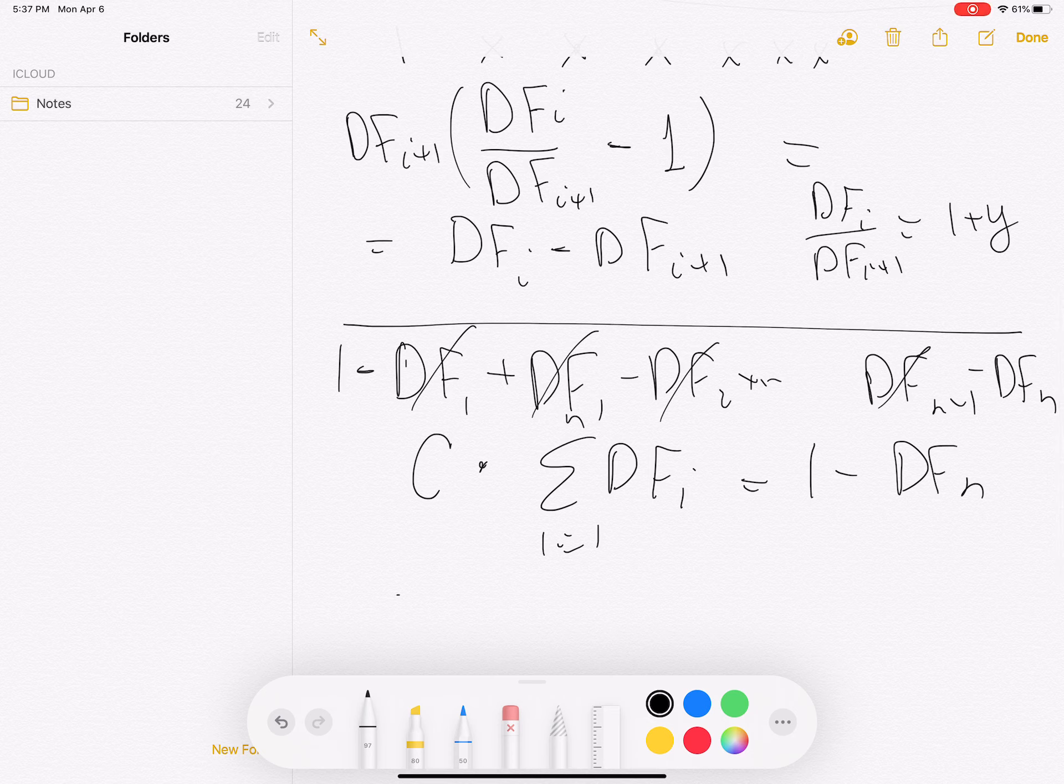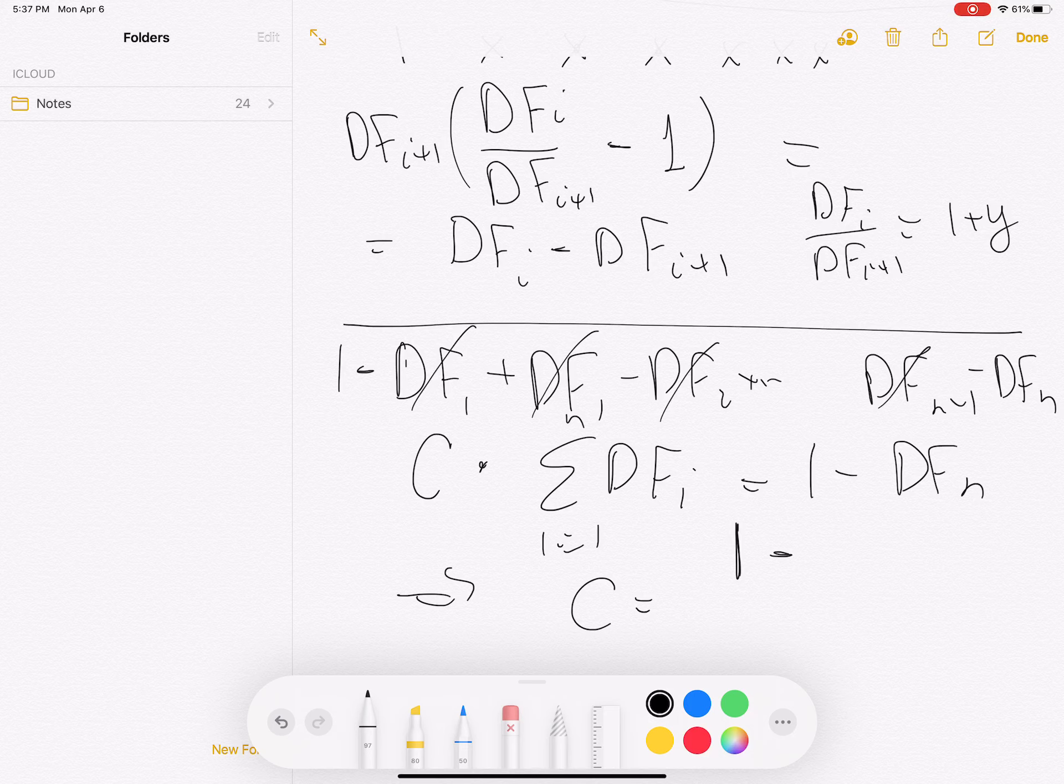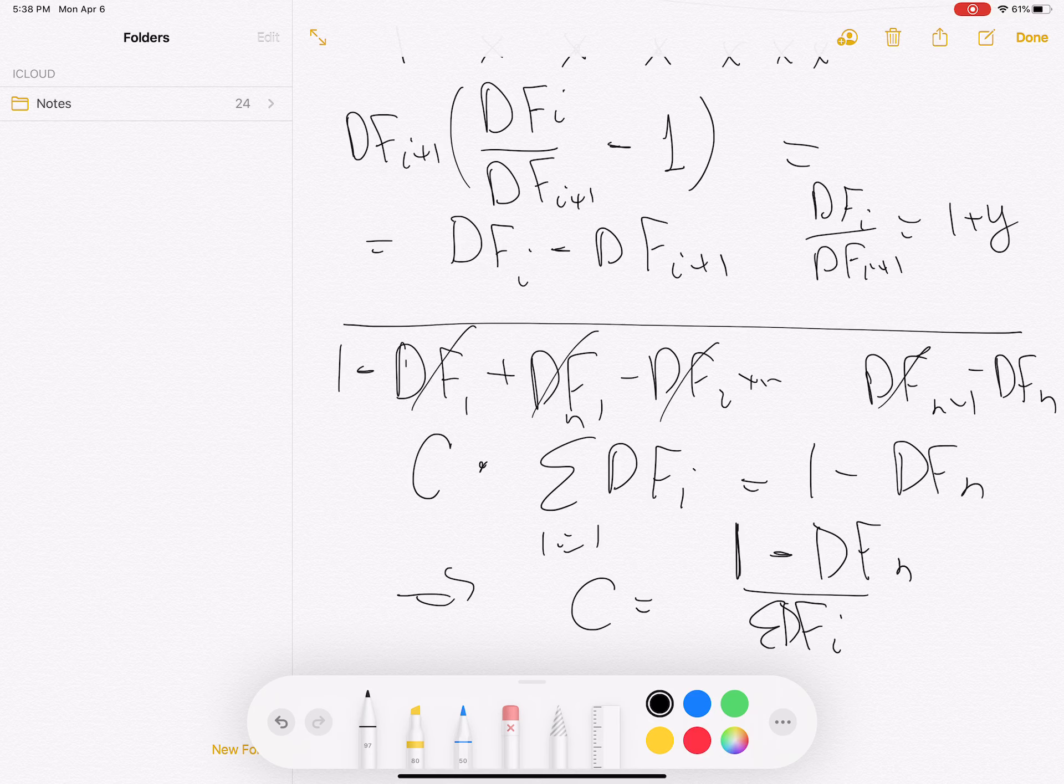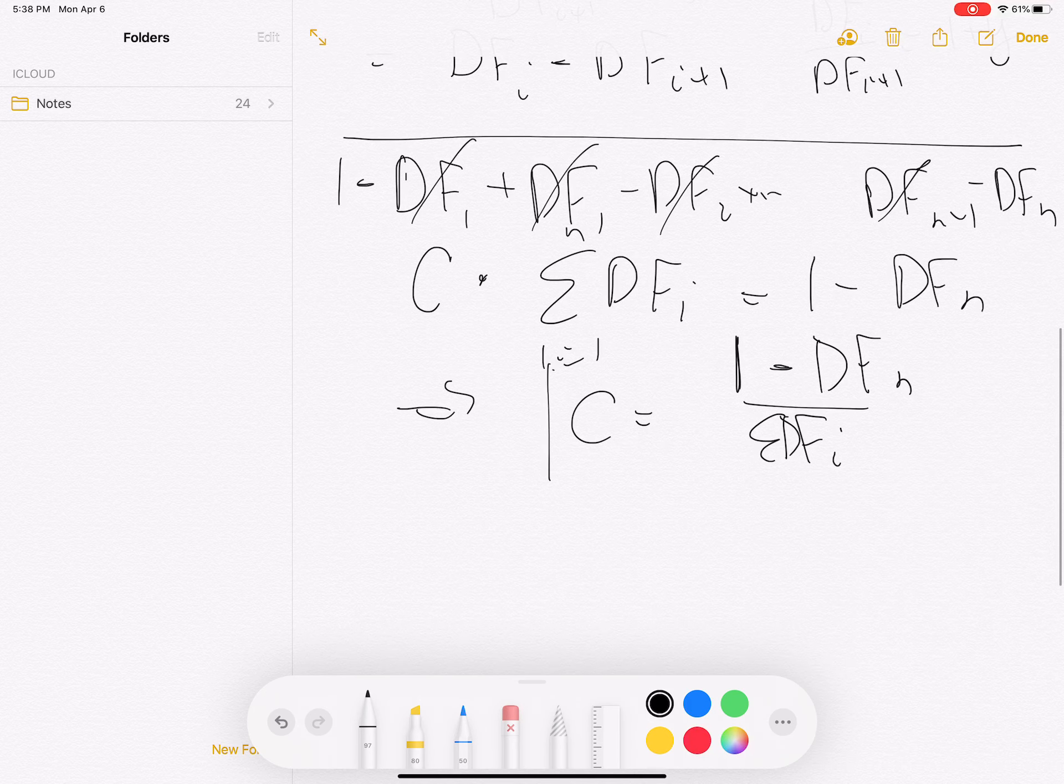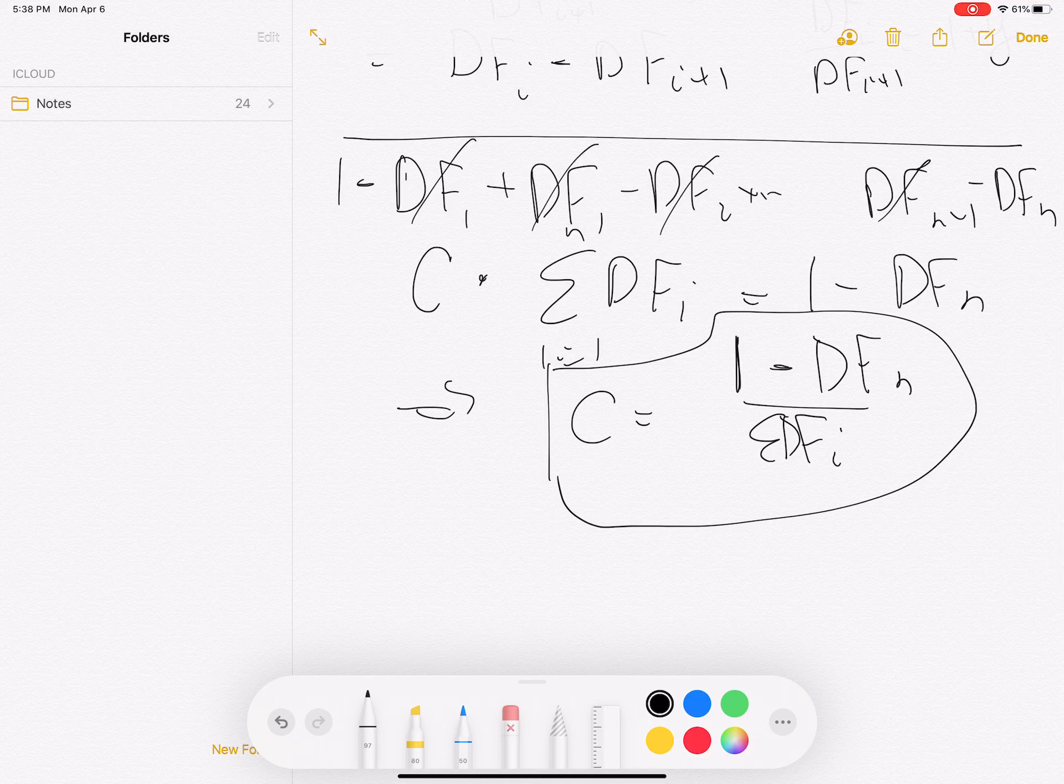Here we are getting the formula that I gave you in the book, which is 1 minus DFn divided by the sum of DFi. That's going to be the fair value of the swap.